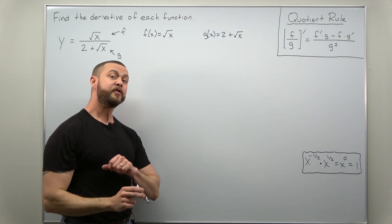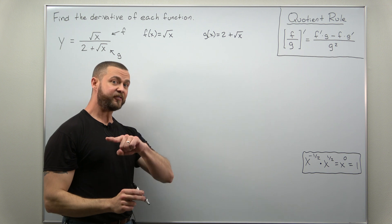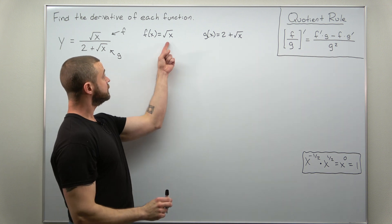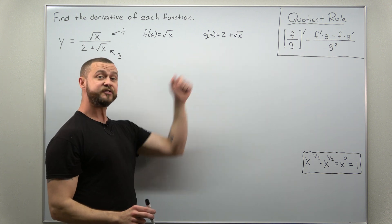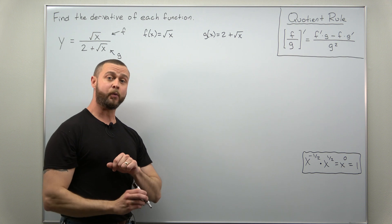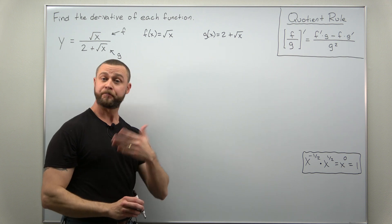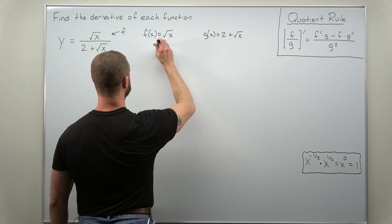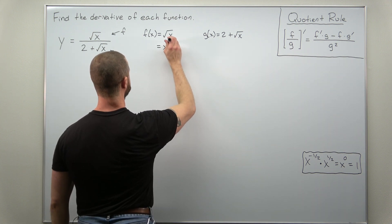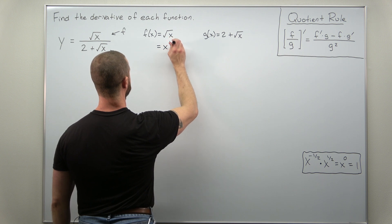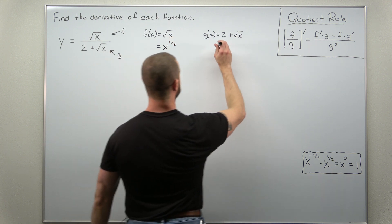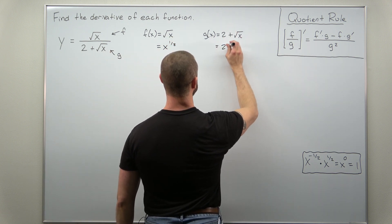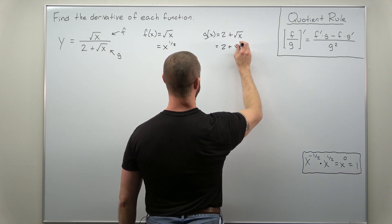Now to calculate the derivatives f prime and g prime, you might rewrite square root of x as x to the one-half power. That way you can apply the power rule to calculate the derivative. So let's do that and rewrite g as 2 plus x to the one-half.